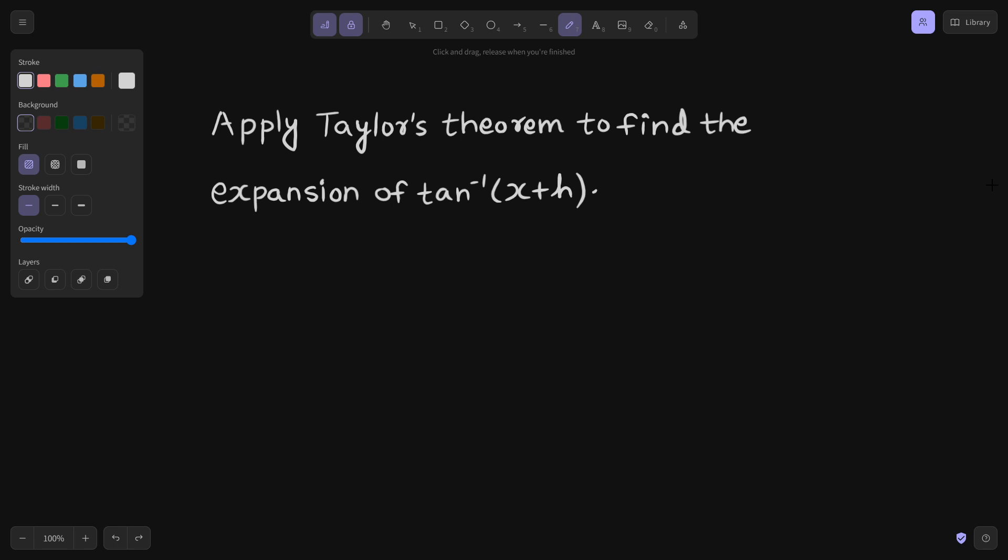While finding the expansion of any function with the help of Taylor's theorem, what are the steps? In the first step, we write whatever function is given to be equal to f of x plus h. So here f of x plus h is tan inverse x plus h.